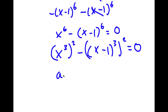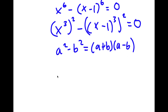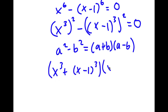And if I have something in the form a squared minus b squared, this is equal to a plus b times a minus b. So in this case, this equals x to the power of 3 plus x minus 1 to the power of 3, times x to the power of 3 minus x minus 1 to the power of 3, is equal to 0.